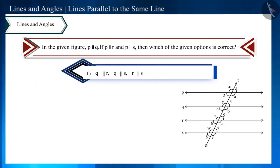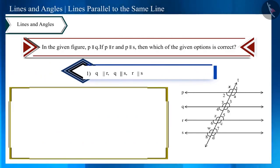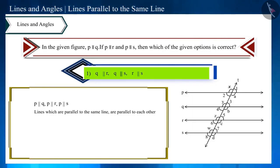Look at the first option. Are these lines also parallel? We are given that line P is parallel to these three lines. If we use this theorem here, that lines that are parallel to the same line are parallel to each other, then we can say that these lines are also parallel. That is, this option is correct.